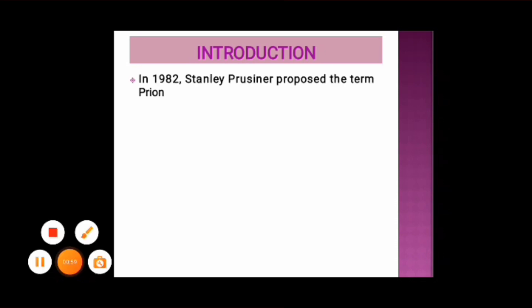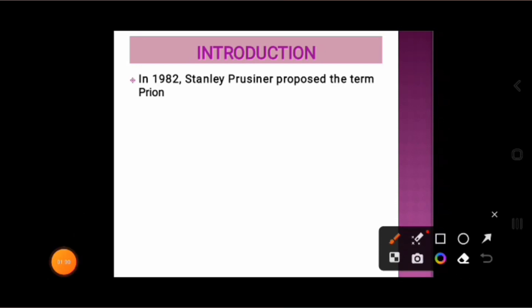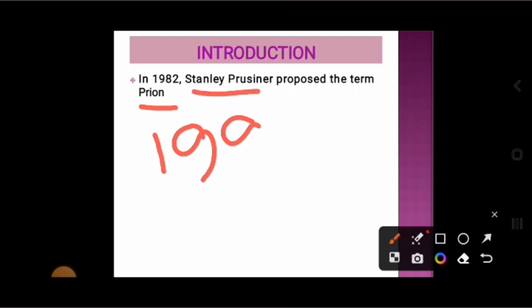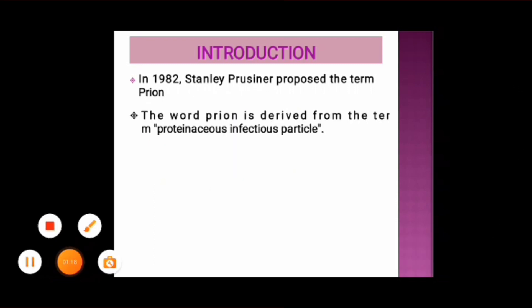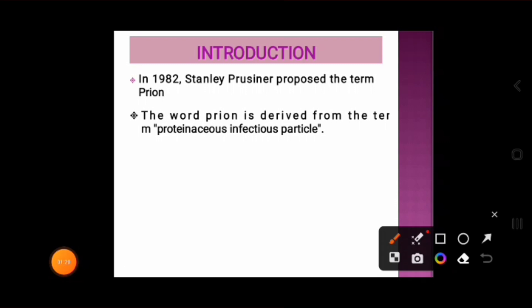In 1982, Stanley Prusiner proposed the term prion, and for this discovery he received the Nobel Prize in 1997. The word prion is derived from the term proteinaceous infectious particle. Basically, they are proteinaceous infectious particles.